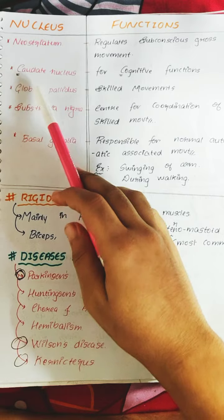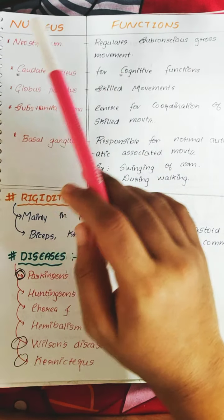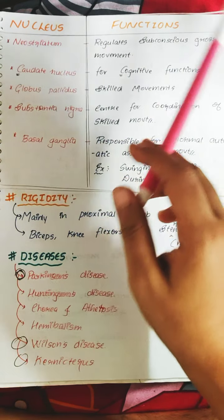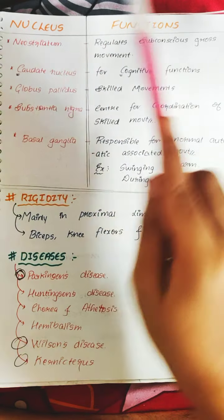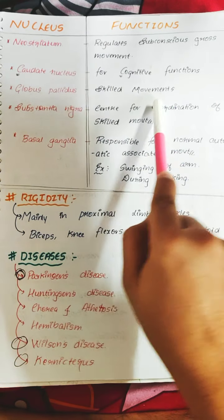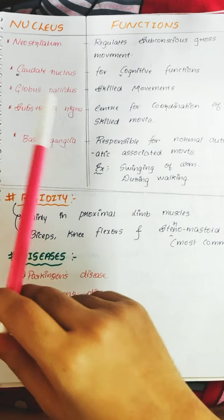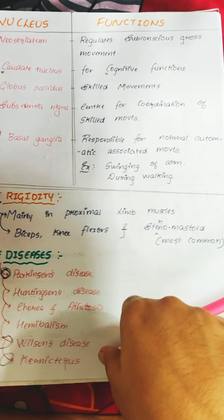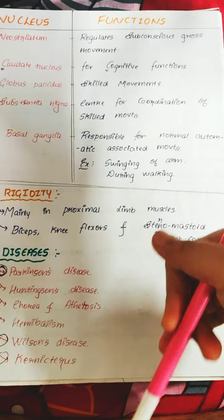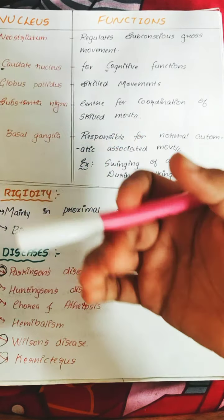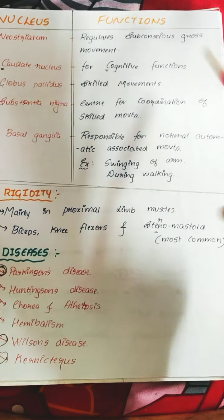Regarding the individual nuclei and their functions: the neostriatum (caudate nucleus plus putamen) helps regulate subconscious and gross movements of the body. The caudate nucleus is mainly involved in cognitive functions. The globus pallidus is involved in skilled movements. The substantia nigra coordinates these skilled movements. Overall, the basal ganglia is responsible for normal automatic associated movements — like swinging the opposite arm when walking forward with each leg.